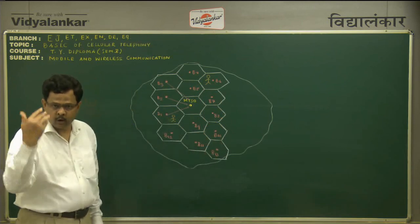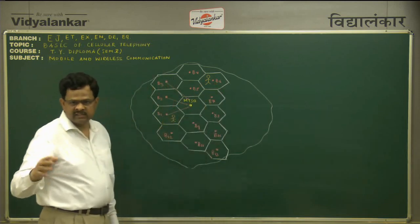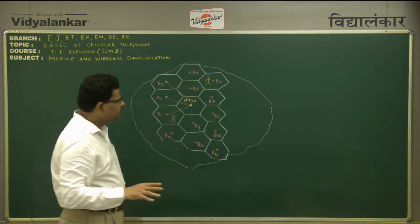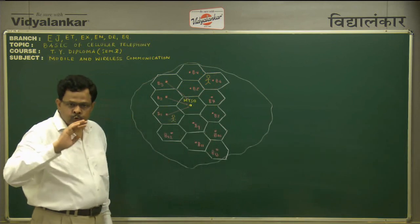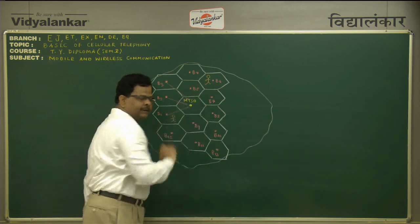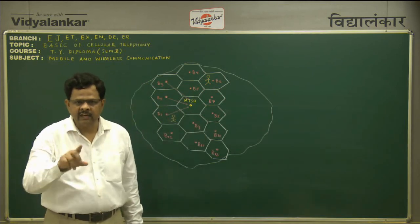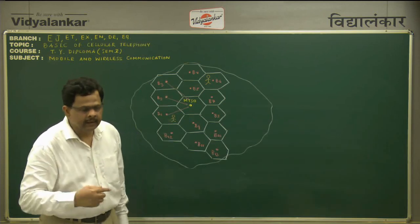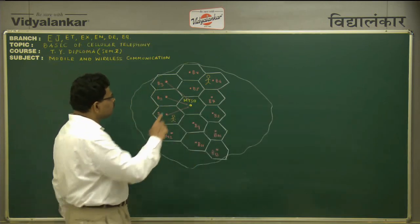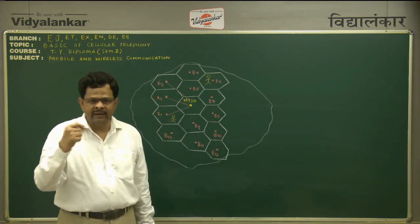Now the person to whom we are calling is present in base station B6. So that number 123456789 is received by base station B6 as well. Base station B6 will then transmit that signal in its own area, and through the air that signal will go into the cell phone of the called party. Once that signal reaches the called party's phone, it will start ringing and that person will come to know there is a call for them. Immediately the cell phone of this person will intimate base station B6 that the person being searched for is present there.